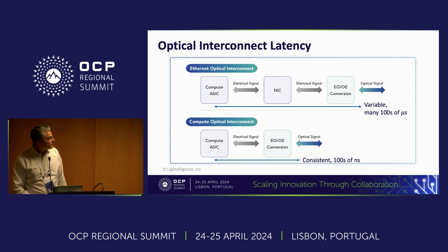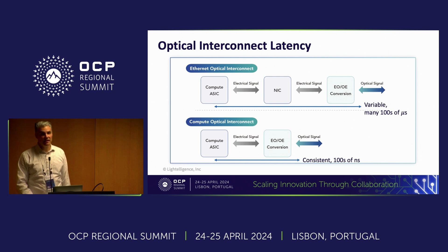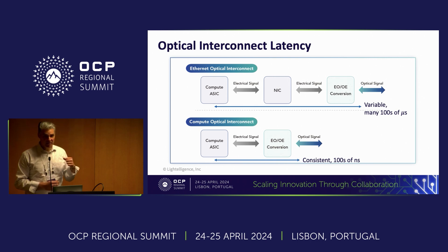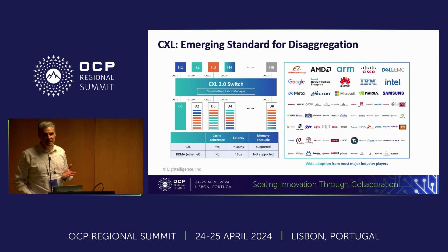Today your traditional Ethernet uses RDMA-based architectures, which have a variable amount of latency — many tens to hundreds of microseconds, especially when you add FEC that's attached to a lot of these copper interconnects. With CXL, it's a much lower latency. The latency is fixed per the PCI Express standard — consistent hundreds of nanoseconds.